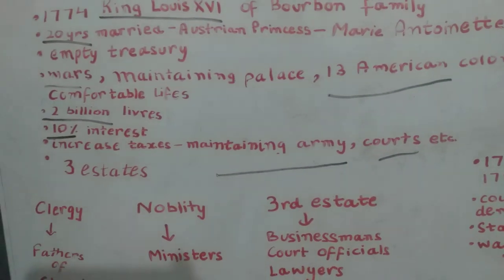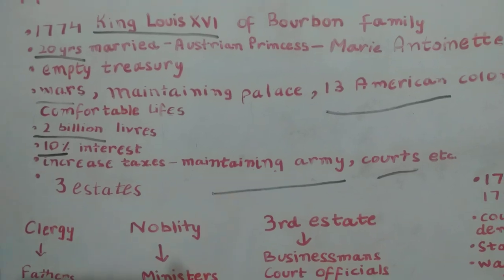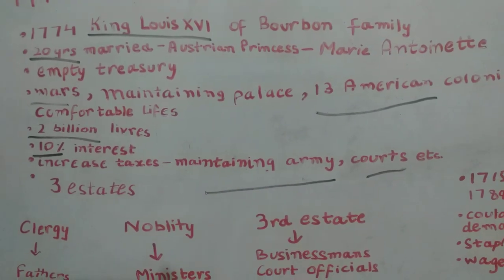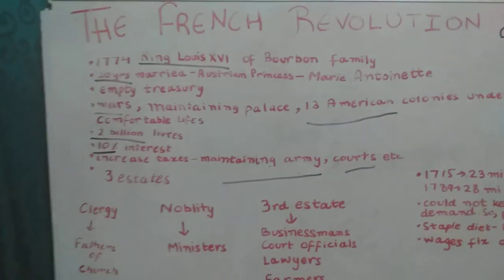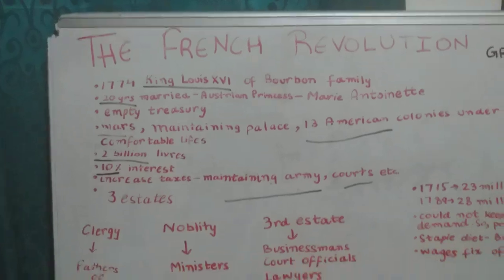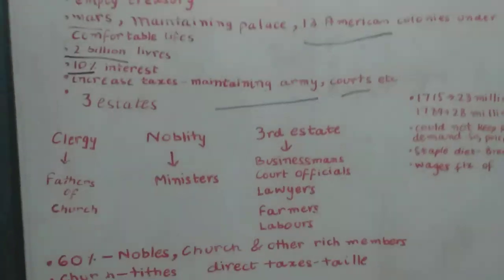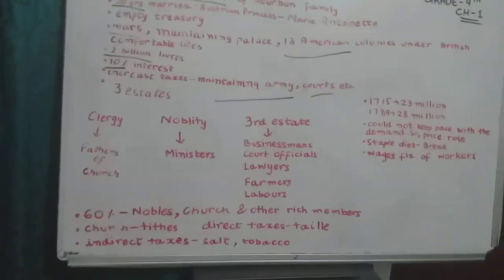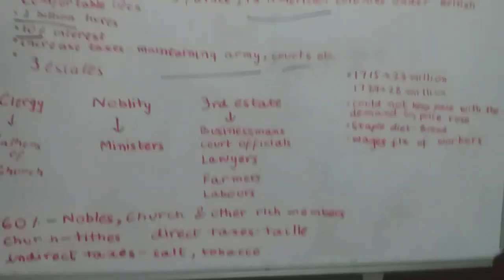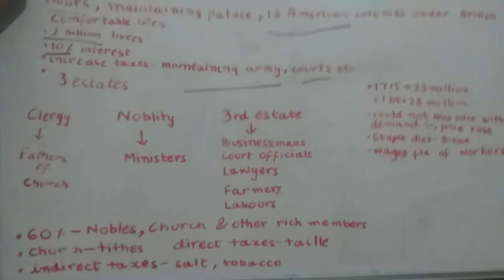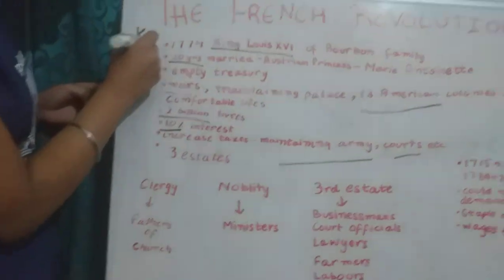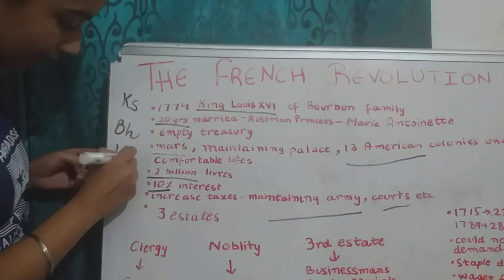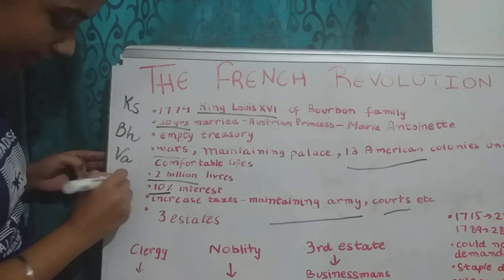Now, who was paying these taxes? To explain this, we can compare it to India, where there was a caste system — similar to Kshatriyas, Brahmans, Vaishyas, and Shudras.